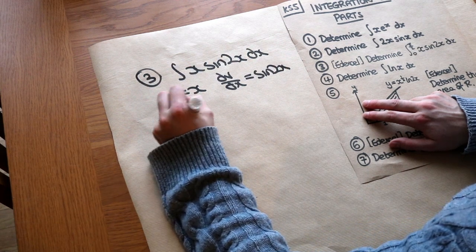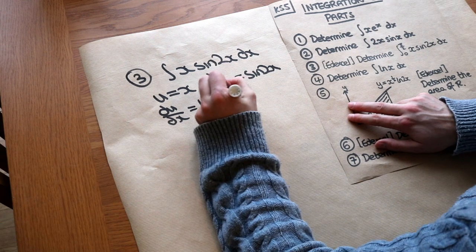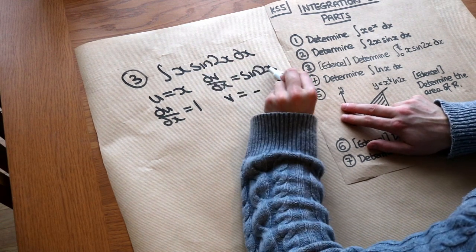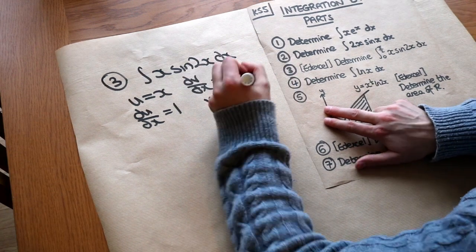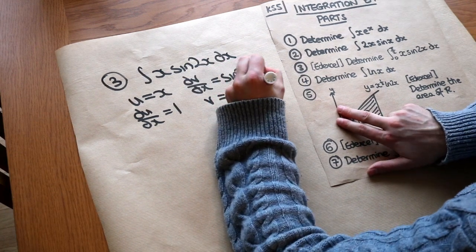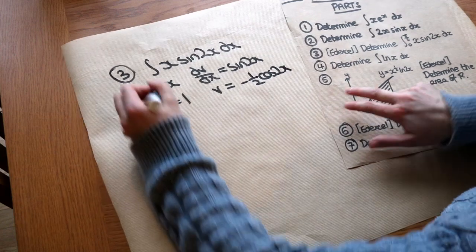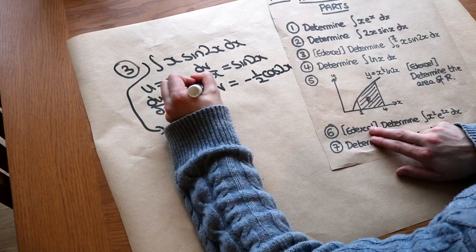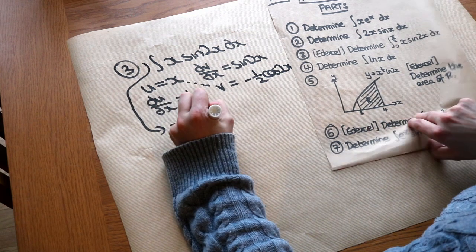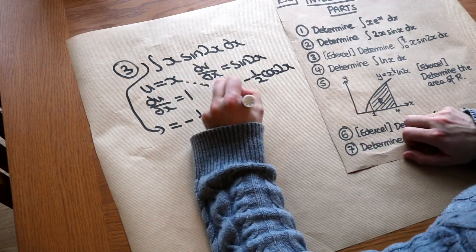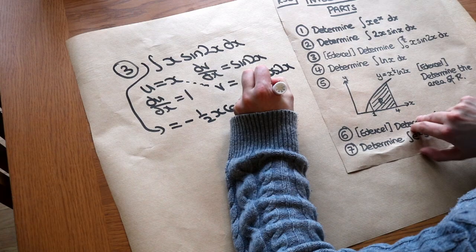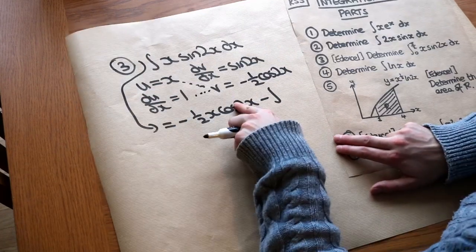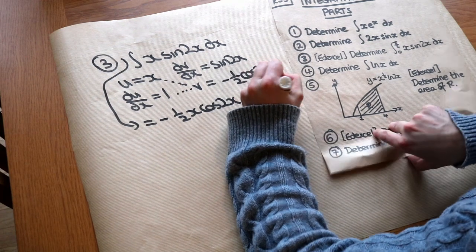du/dx = 1 — we differentiate u — and we integrate sin(2x). Using the reverse chain rule, it becomes −½cos(2x). Applying integration by parts, we get the 'ultraviolet light' term: −½x·cos(2x), minus the integral of the product of the two new things, which is −½cos(2x).